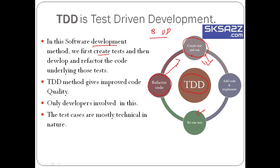TDD gives improved code quality. In TDD, they create one test case, run it, implement the code, and if the test case fails, they change the code again. If the test case passes, they create another test case. Because they keep revisiting the same existing code every time, all developers make sure there is no fault in the code — this is how TDD improves code quality.